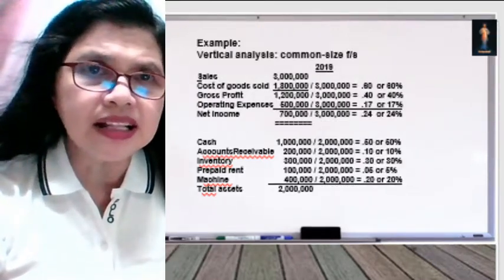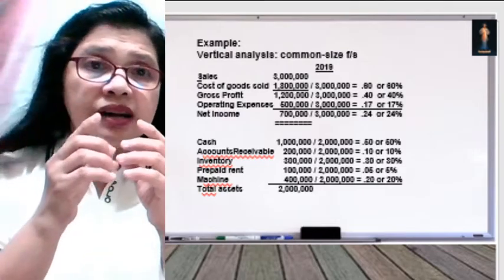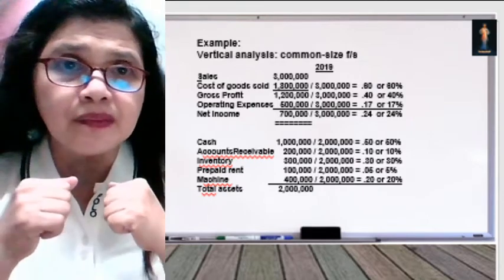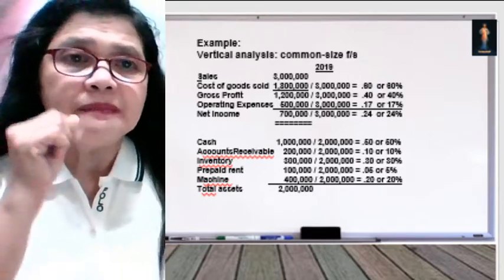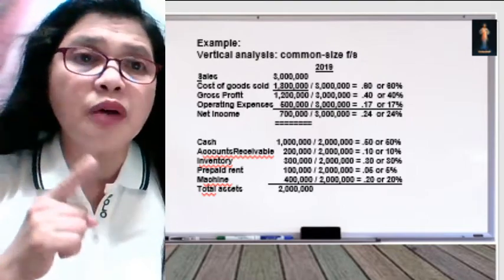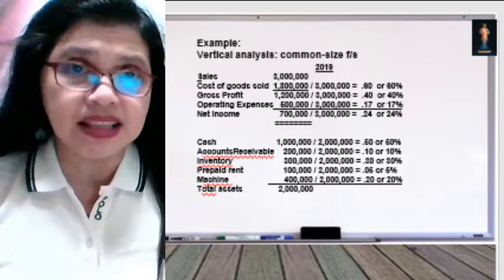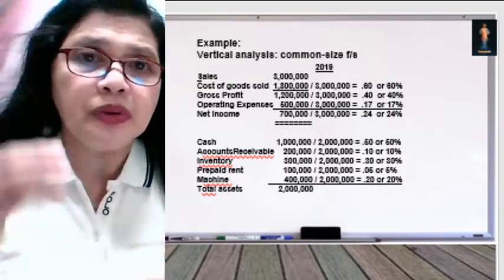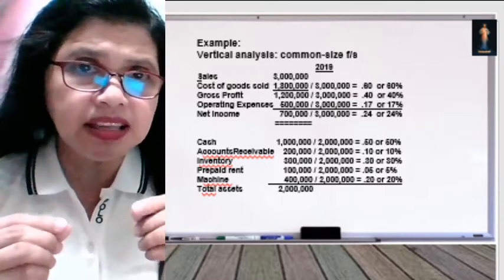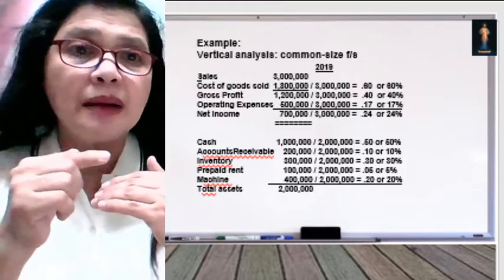In vertical analysis, you compare different accounts for only one year, as opposed to horizontal analysis which uses two years. Vertical analysis uses common size analysis or common size financial statements. Why common size? Because we compare one account — for example, sales, cost of goods sold, gross profit, operating expenses, and net income — all compared to the sales figure, so sales becomes the base.